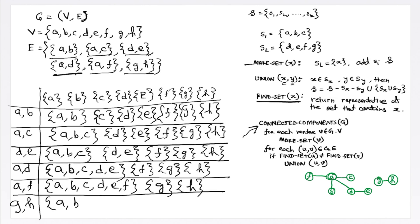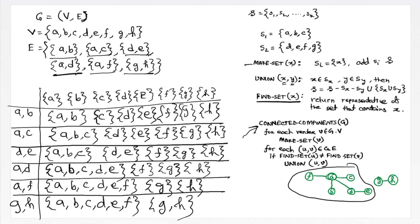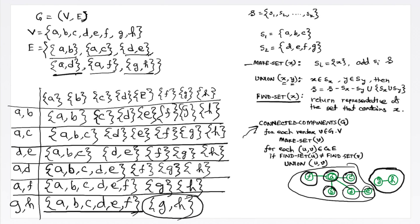The set {a, b, c, d, e, f} remains as one set and {g, h} become the second set. Notice that in our graph there were two components — the first had a, b, c, d, e, f and the second had g and h — which matches exactly. This indicates that the algorithm is correctly detecting the connected components.